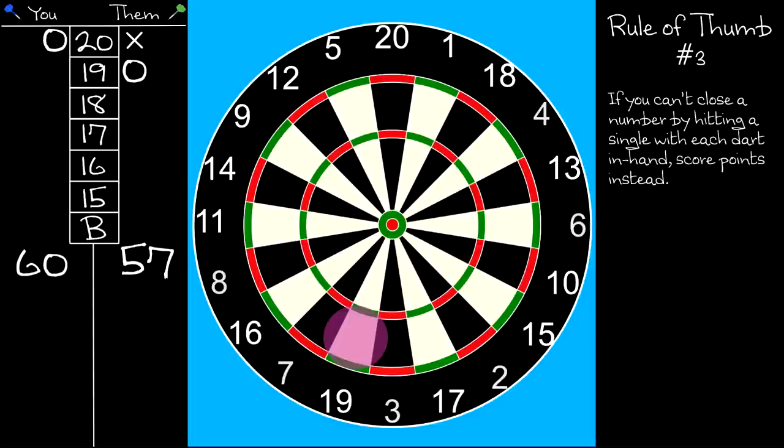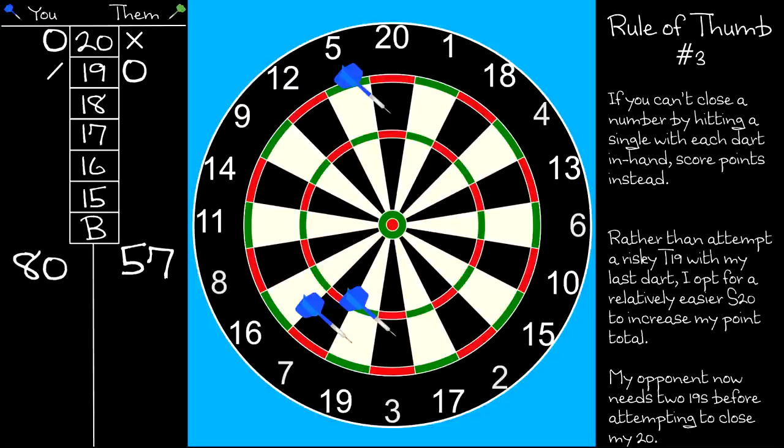But regardless of whether you throw at single, treble, or even double, you should always follow the next rule of thumb which states that if you can't close the number you're throwing at by hitting a single with each dart in hand, then score instead. So if the first or second dart you throw at 19 misses its target, switch back to 20. By increasing your points total, you're forcing your opponent to throw more 19s to catch up.